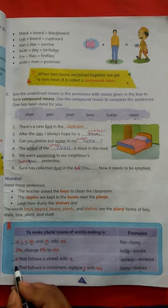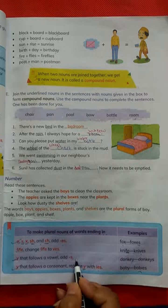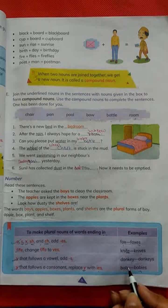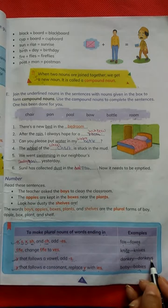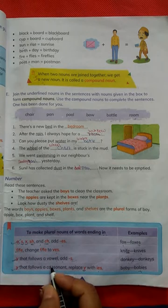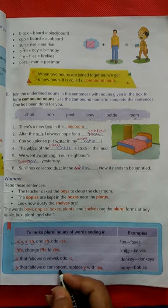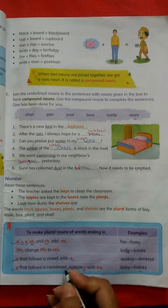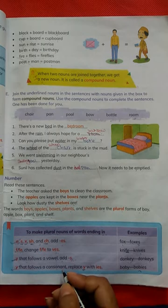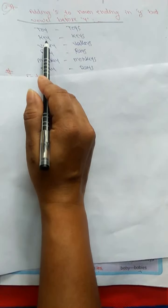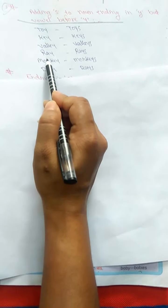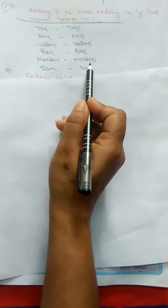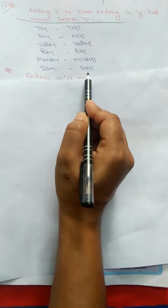Now see the third rule. When Y follows a vowel, add S. The vowel sounds are A, E, I, O, U — everything else is a consonant. For example: donkey — ending with vowel plus Y — becomes donkeys. Toy becomes toys. Key becomes keys. Valley becomes valleys. Ray becomes rays. Monkey becomes monkeys. Day becomes days.